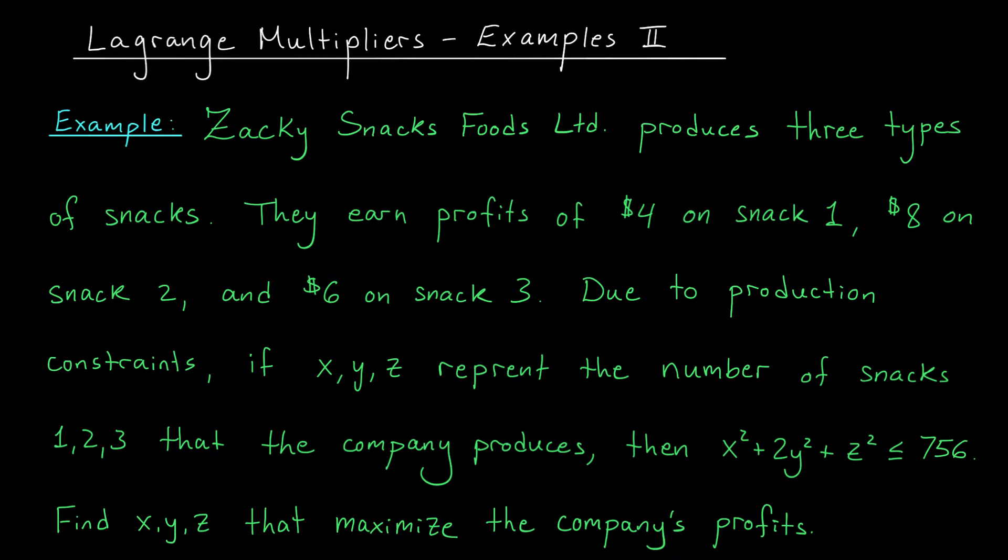Now although this is currently phrased as an economics problem, an example like this could easily be adapted to the sciences or engineering. Here we're dealing with a firm, Zaki Snacks Foods Limited, and they produce three types of snacks. On snacks of type one they earn four dollars of profit per unit, on snacks of type two eight dollars of profit per unit, and on snacks of type three six dollars of profit per unit.